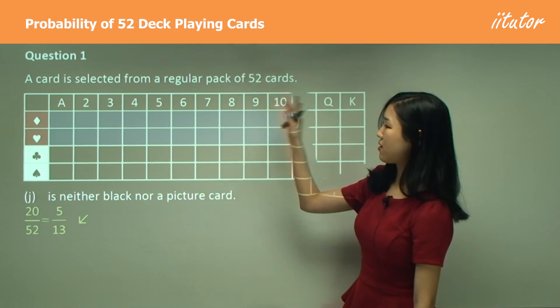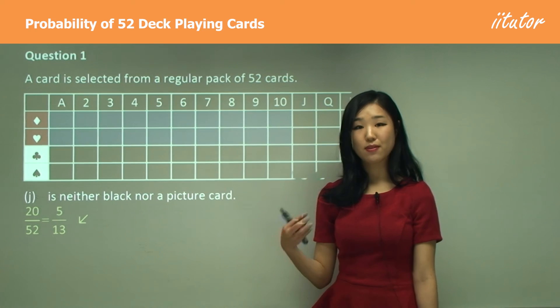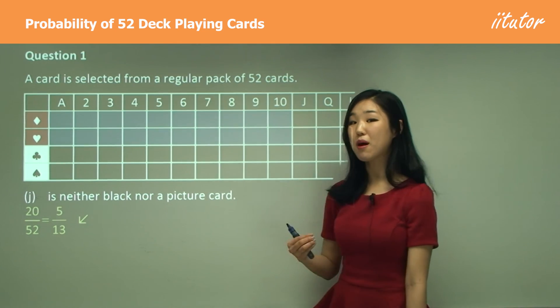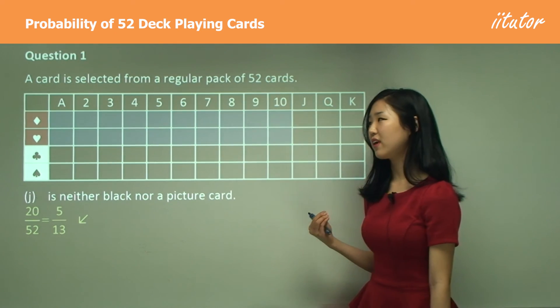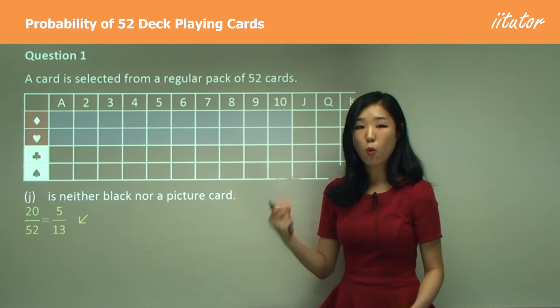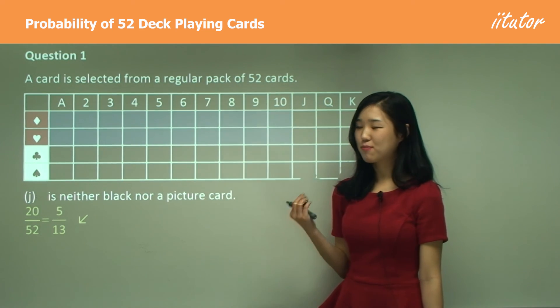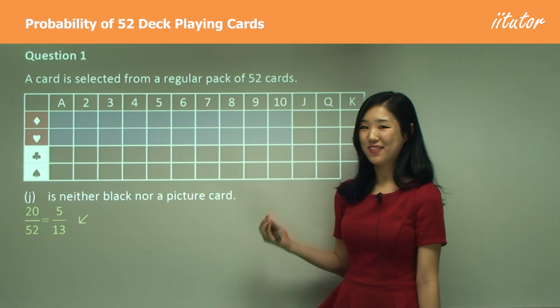You can see that after I draw this table up, it's very simple. As I said, it's just a matter of counting them up. But the key thing I want you to be careful about here is how to distinguish the 'or' and the 'and' in the question. Just be really careful when you're reading the question.